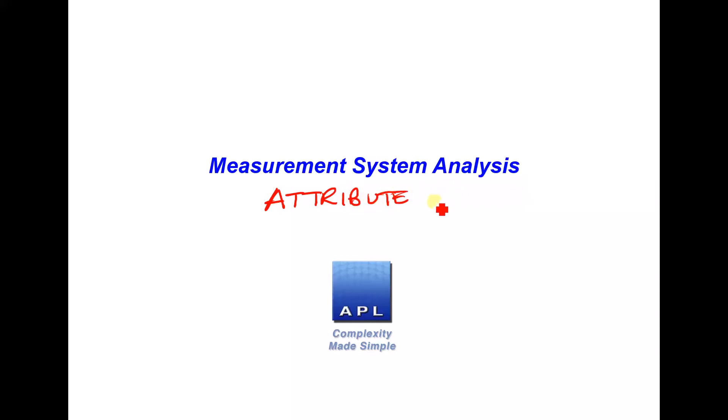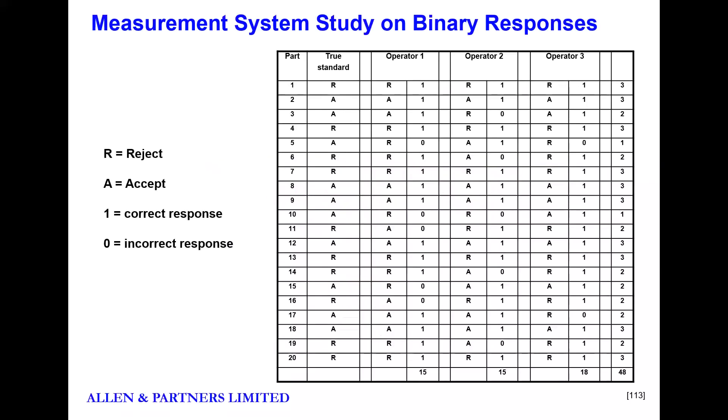So we have a pass-fail situation. Some kind of cosmetic inspection, looking at the surface finish of a product maybe, looking at printing quality, that type of thing. Something that's pass-fail in nature rather than measurable in nature. And the look of the MSA is going to look slightly different to when we're looking at measurable data. And here's the way it's going to look.